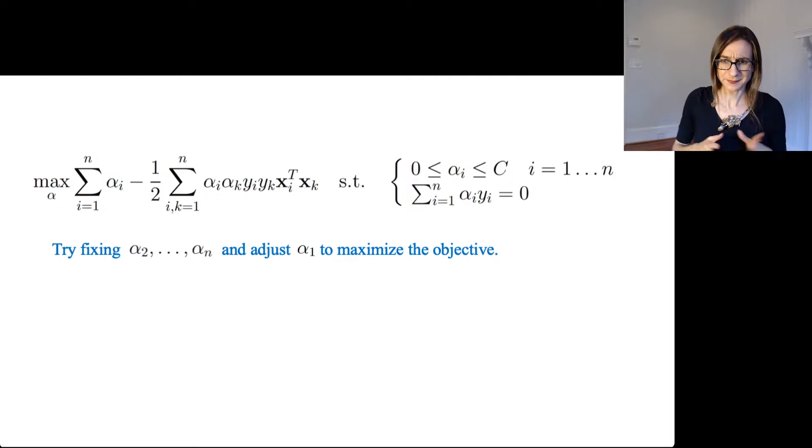But here it doesn't work. So why is that? Well, let's try fixing alpha 2 through alpha n and we'll adjust alpha 1 to maximize the objective and we'll see where that goes wrong. So where it goes wrong is that constraint.